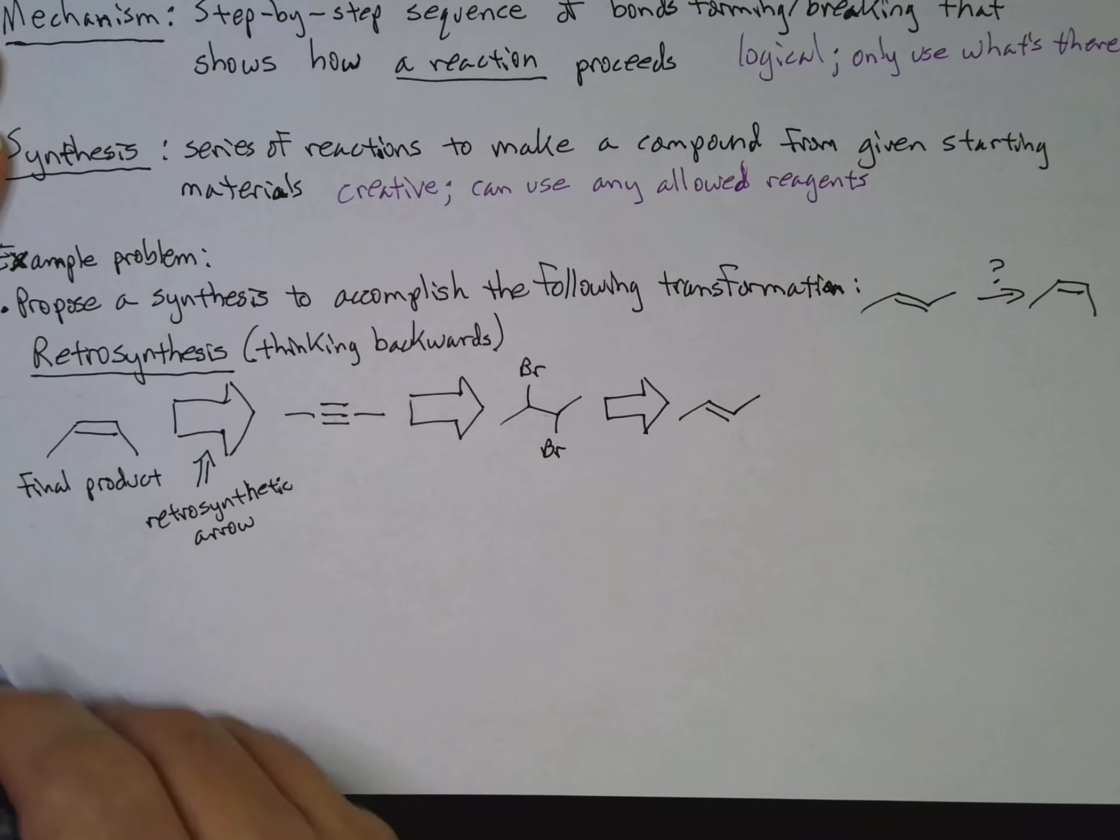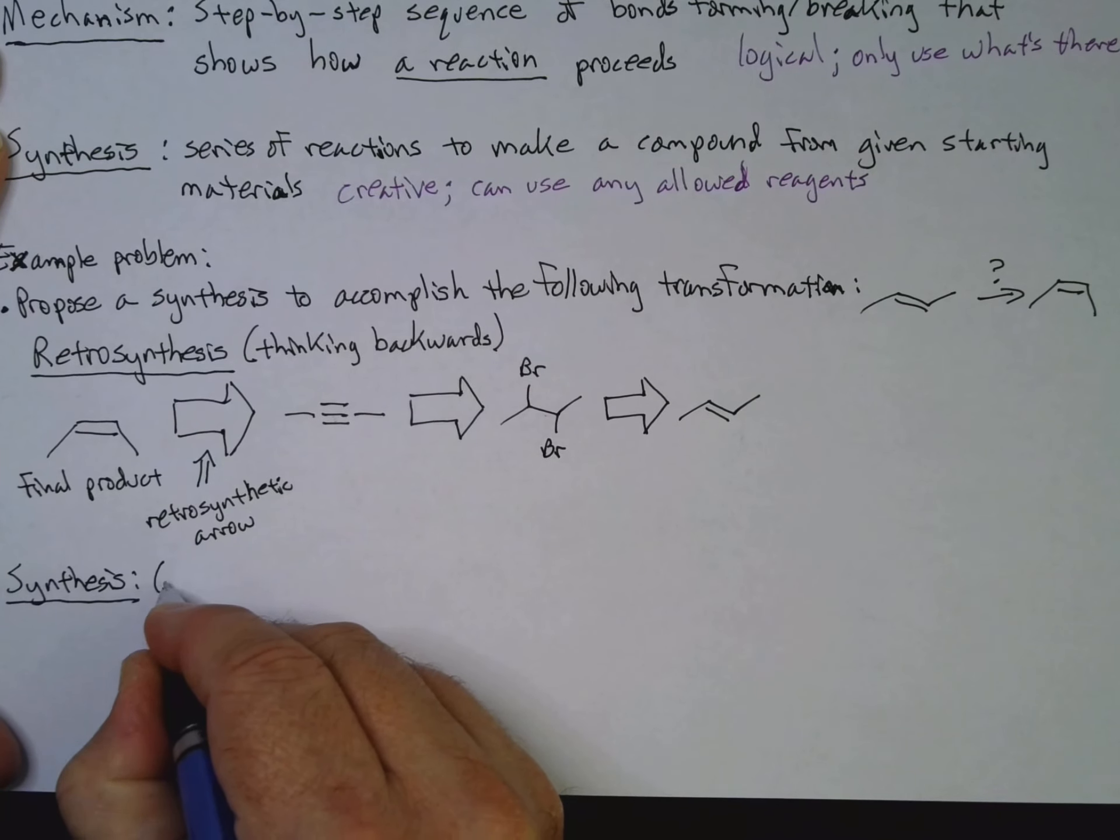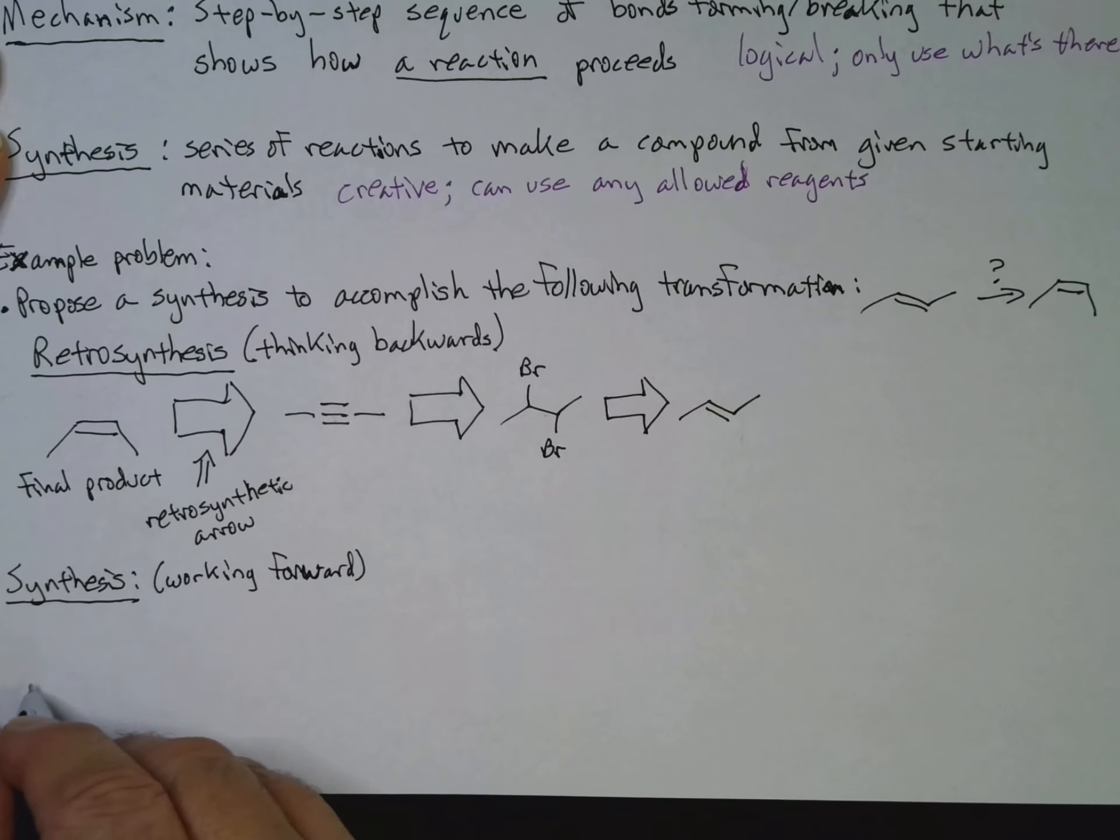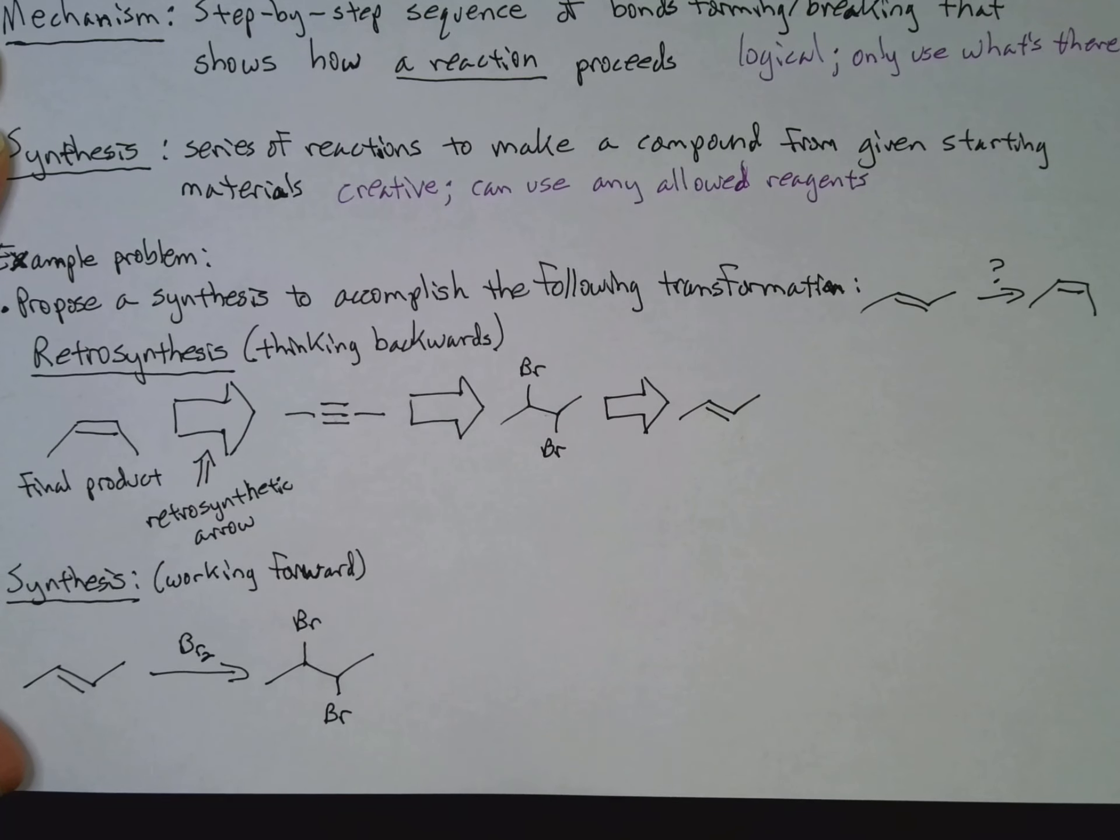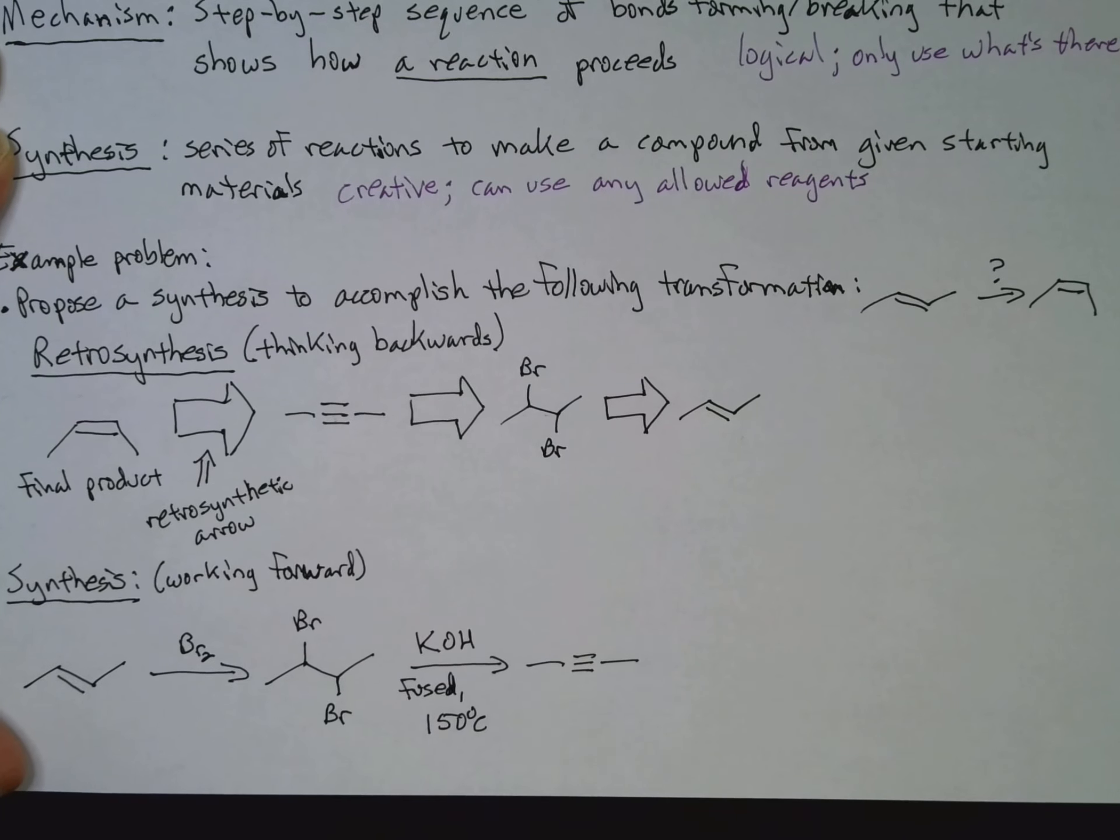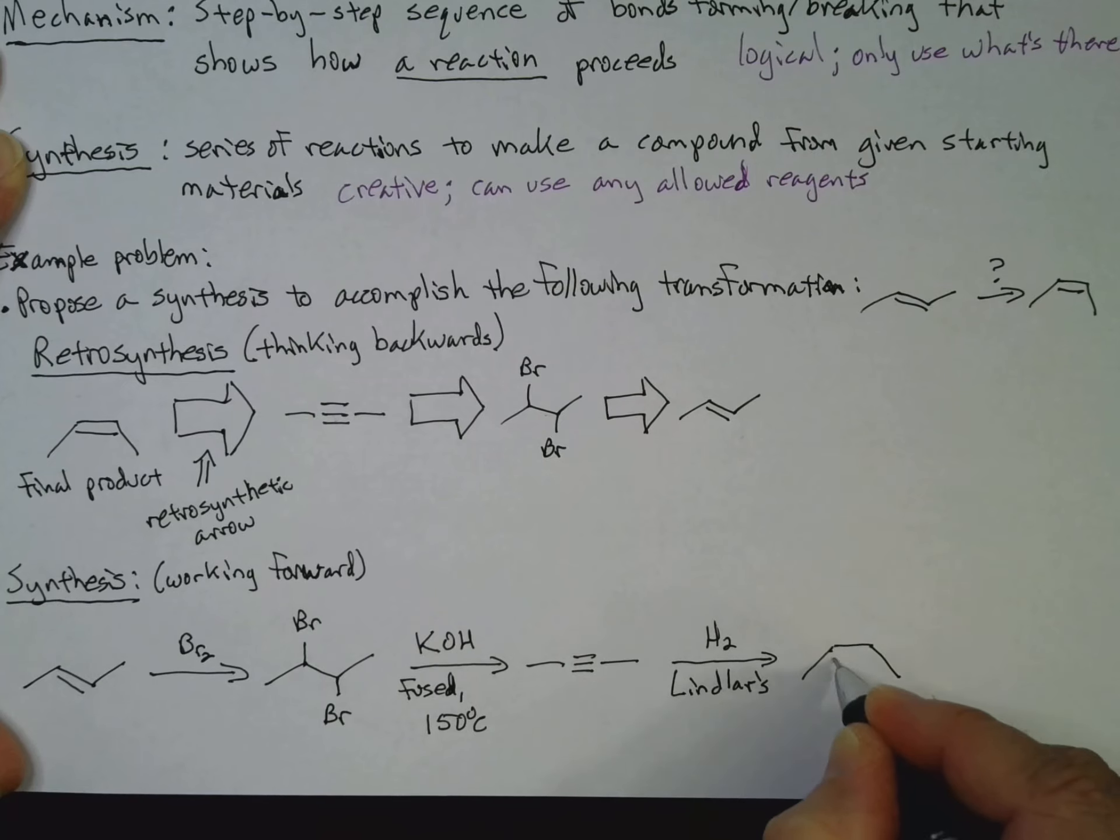So now, that means our synthesis, and our synthesis is working forward. We'll start with that guy, and then regular reaction arrow. So I want to use Br2, I get Br, Br, in this case, the stereochemistry doesn't matter. Now, I need to get my alkyne, and how did I do that? Well, I used KOH. And we're going to use fused KOH, and we're really going to heat it up. And now, lastly, I can use H2 and Lindlar's catalyst to get my final product.